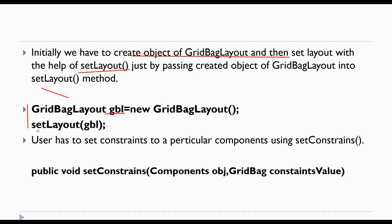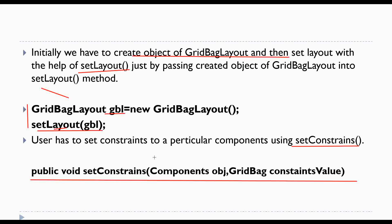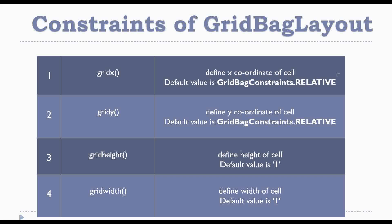Here the user can set constraints to a particular component using the setConstraints method. This method is used like this — it has two parameters: first is the component object, and second is the GridBagConstraints value. Now let's see the constraints of GridBagLayout.